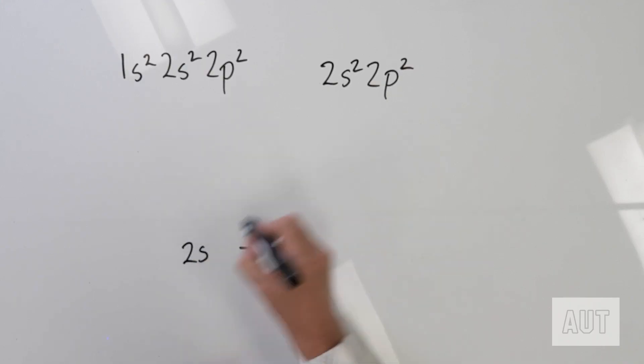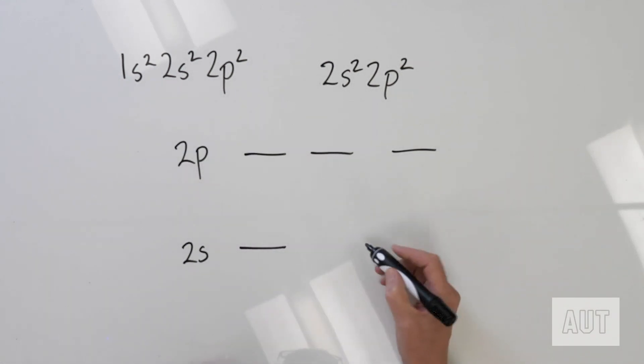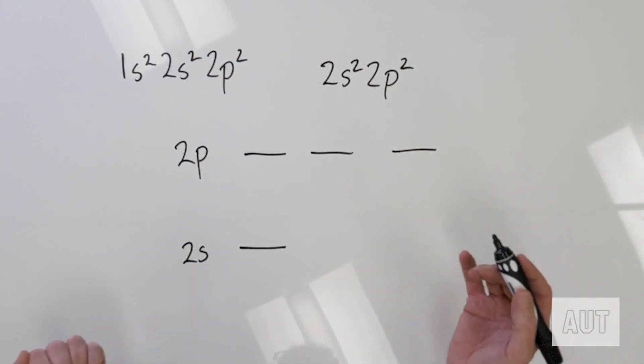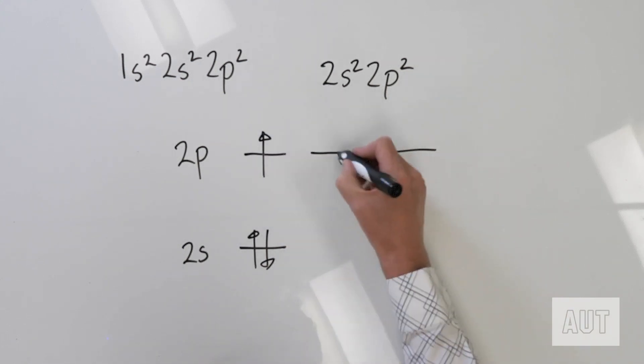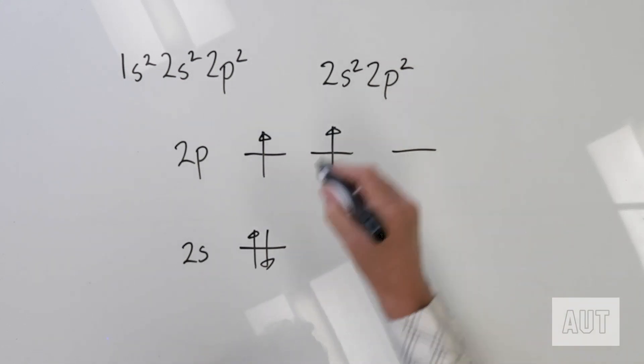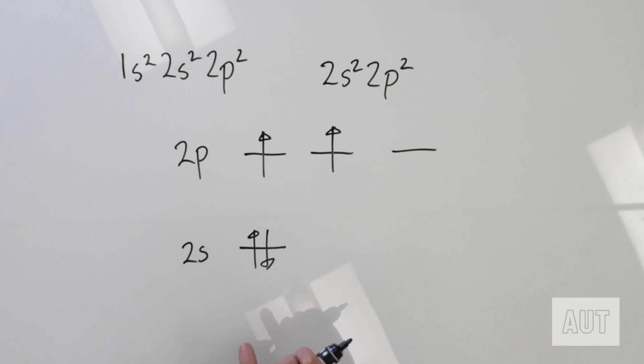Let's draw that on an energy level diagram. Here's your 2s orbital and here are your 2p orbitals. The ground state electron configuration of carbon: 2s2 — let's pop two electrons in there — and 2p2. Remember, according to Hund's rule, we put the two electrons in the p orbitals in separate orbitals so as to give our maximum value of spin. Now, what have we got here? We have two unpaired electrons — only two unpaired electrons.